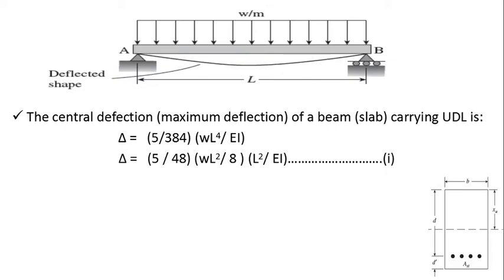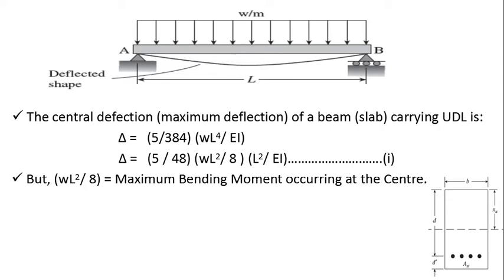Again, I can rearrange the terms: Δ = (5/48) (WL²/8) (L²/EI), equation number 1. But we know that WL²/8 is nothing but maximum bending moment occurring at the centre of a beam when the beam is carrying UDL of W per unit run.